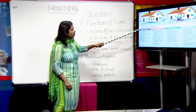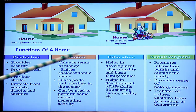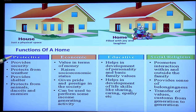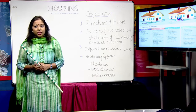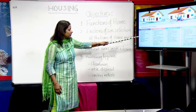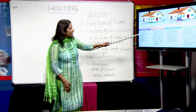These are the various functions performed by a home: first is the protective function, second is the economic function, third is the educative function, and fourth is the social or religious function. Moving to the first function — a house provides us security. It protects from weather: from sun, cold, and rain. It also provides shelter and protects us from wild animals, street animals, and enemies.